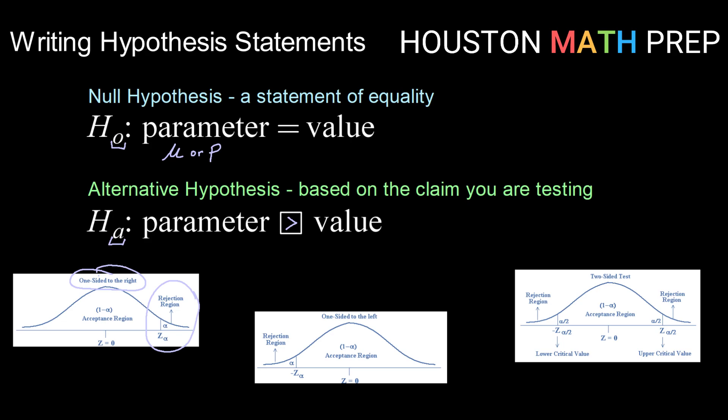We can have kind of the opposite of that and have that the parameter is less than the value. If that's the case, then we would be still working with a one-sided test, but this side we would be one-sided to the left. And so our rejection region this time would be down here at the bottom, or the left tail.